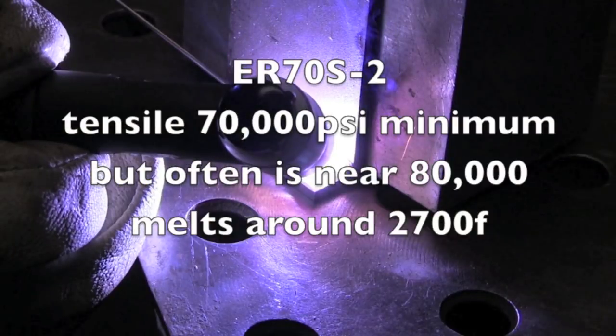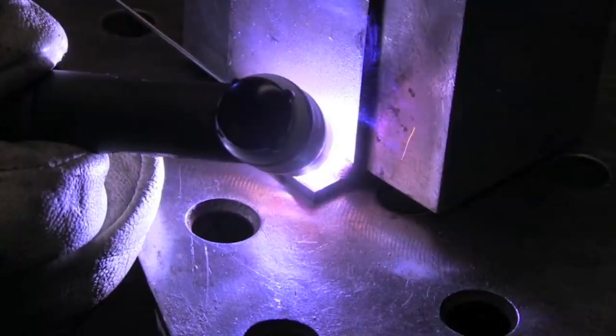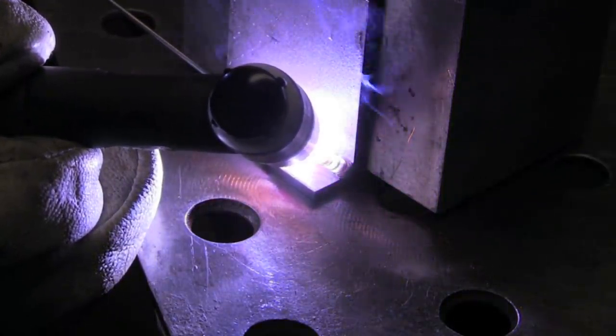First up is ER70S2 welding rod. Tensile strength is 70,000 psi minimum, but oftentimes it's closer to 80. Now if you're not interested in TIG brazing or how it compares to welding, I think this might be a pretty good little tutorial on just making a nice little fillet weld on a T-joint.